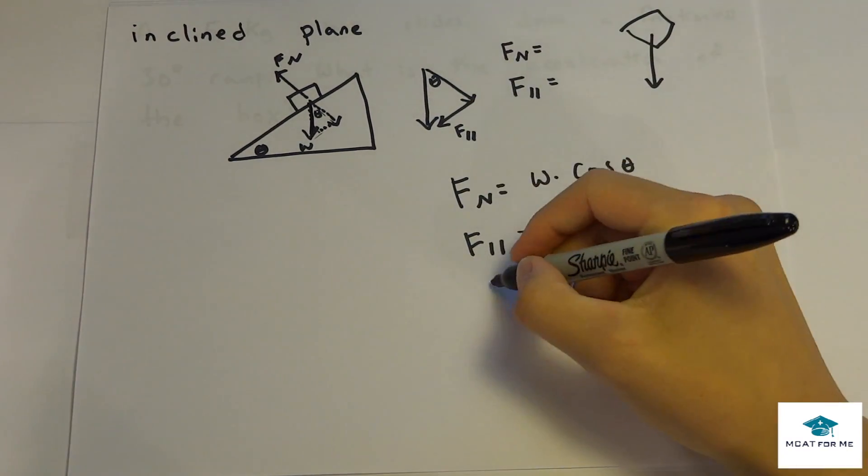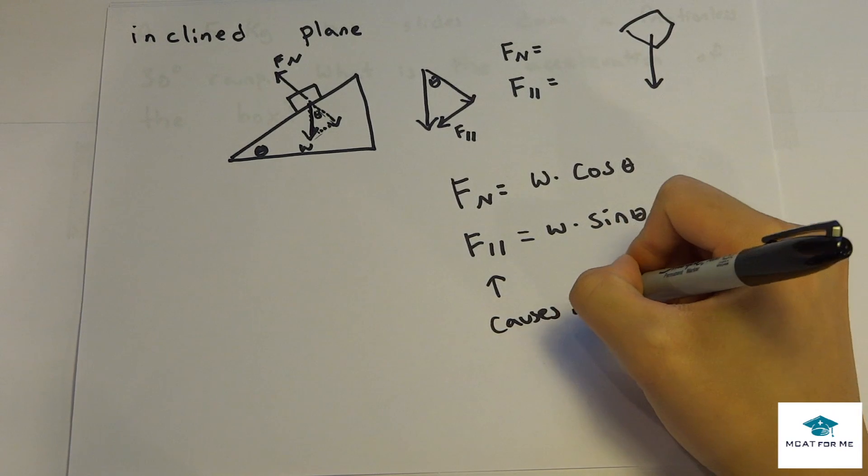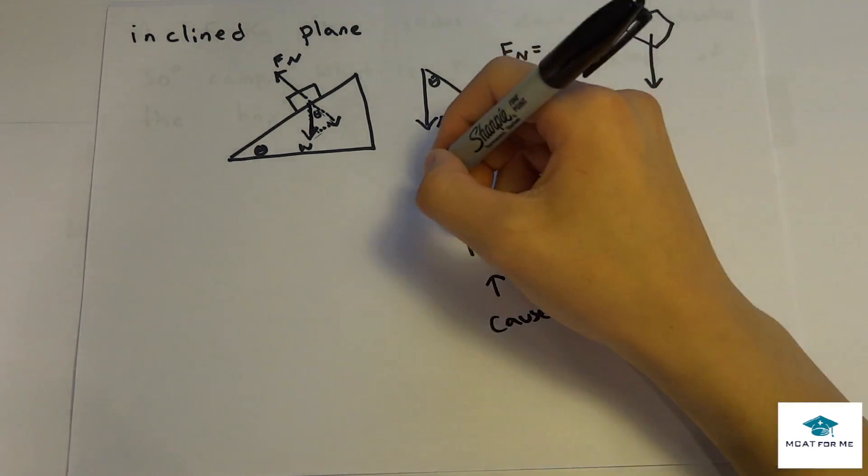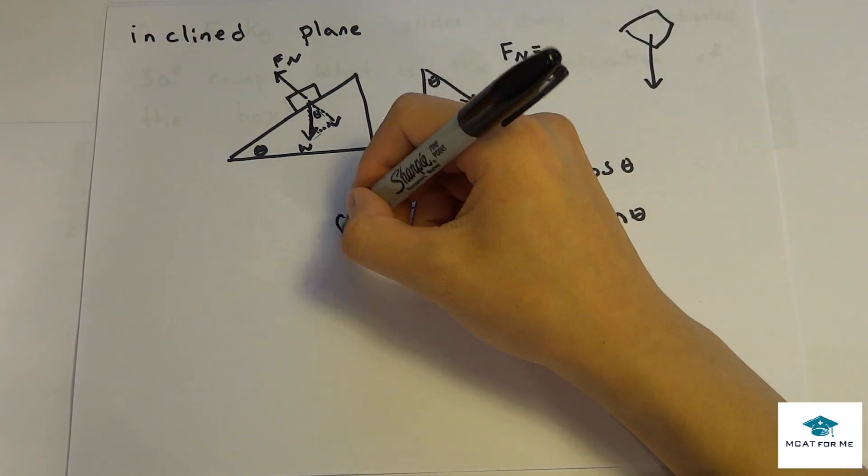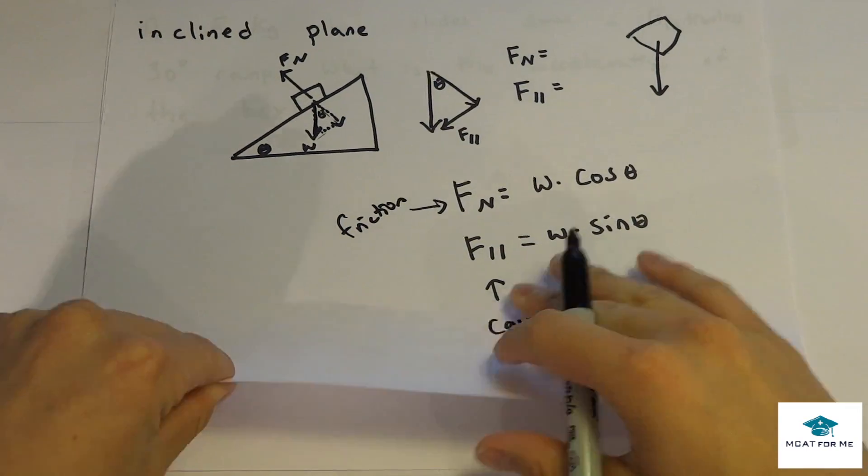So the parallel force is what actually causes this thing in motion. So it causes the motion, and this normal force is just what we need when we need to know the normal force, especially for friction. So we'll see examples later.